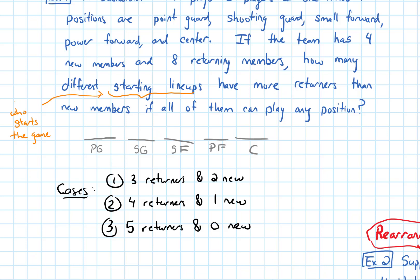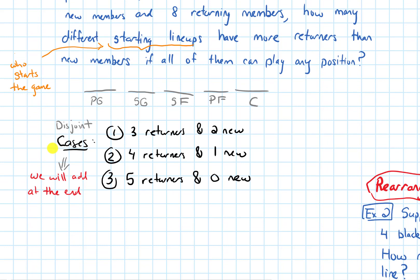These cases are what I'll call disjoint, meaning they can't happen at the same time. If I'm in case 1 with 3 returners and 2 new people starting the game, I can't also be in case 3 where 5 returners and 0 new people started. When we have these disjoint cases, after we work out how many different lineups are in each case, we will add at the end of the problem. So let's look at these case by case.